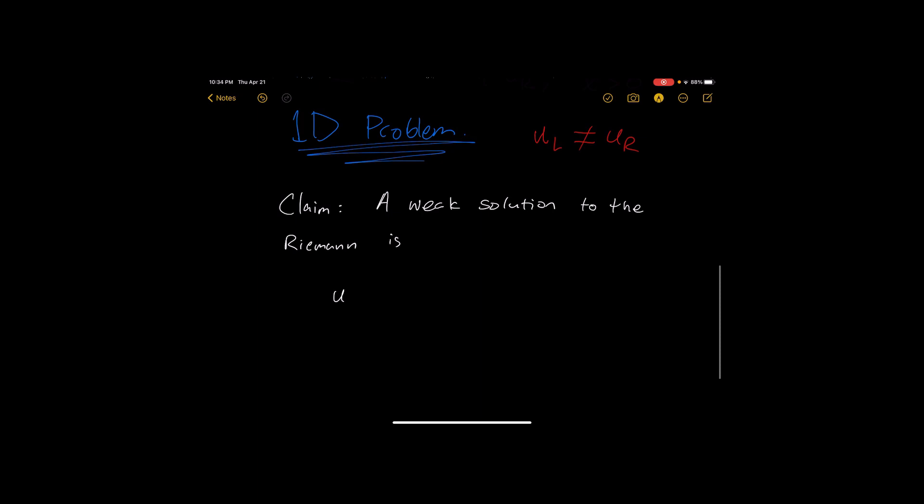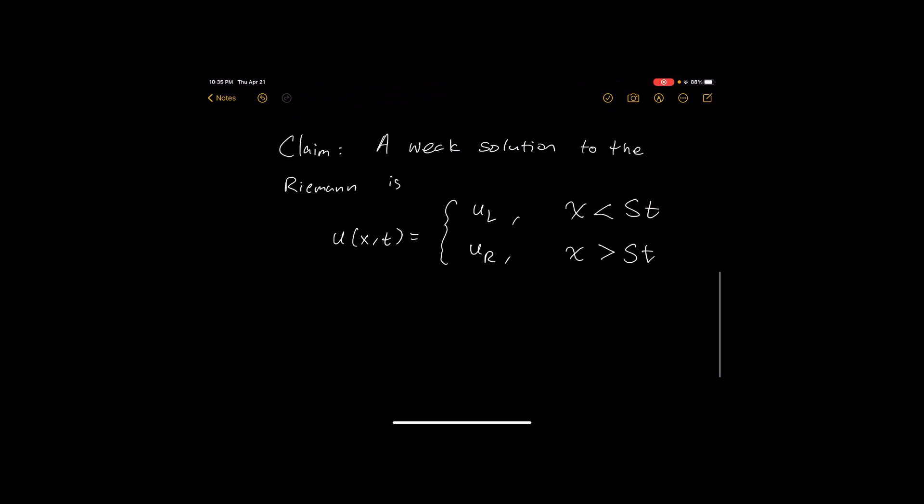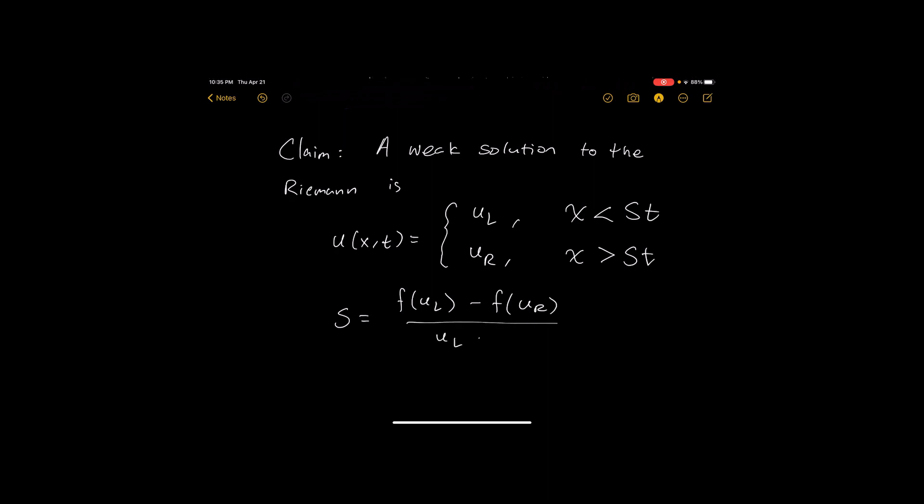That is, u(x,t) is equal to u_left if x is less than st and u_right if x is greater than st. Okay, and what is capital S here? So capital S we're going to define it as f(u_left) minus f(u_right) over u_left minus u_right.